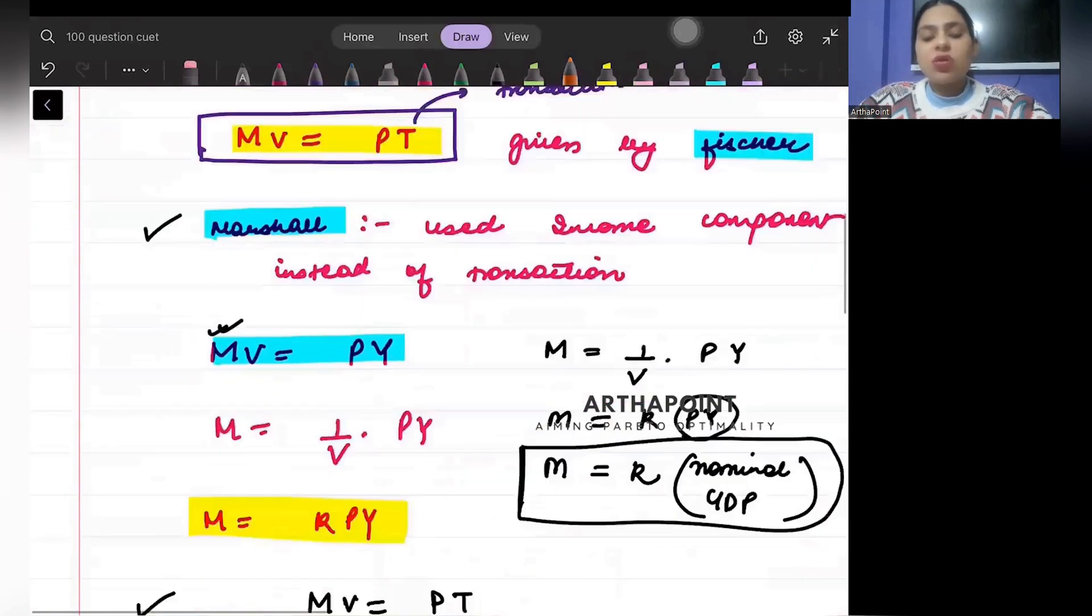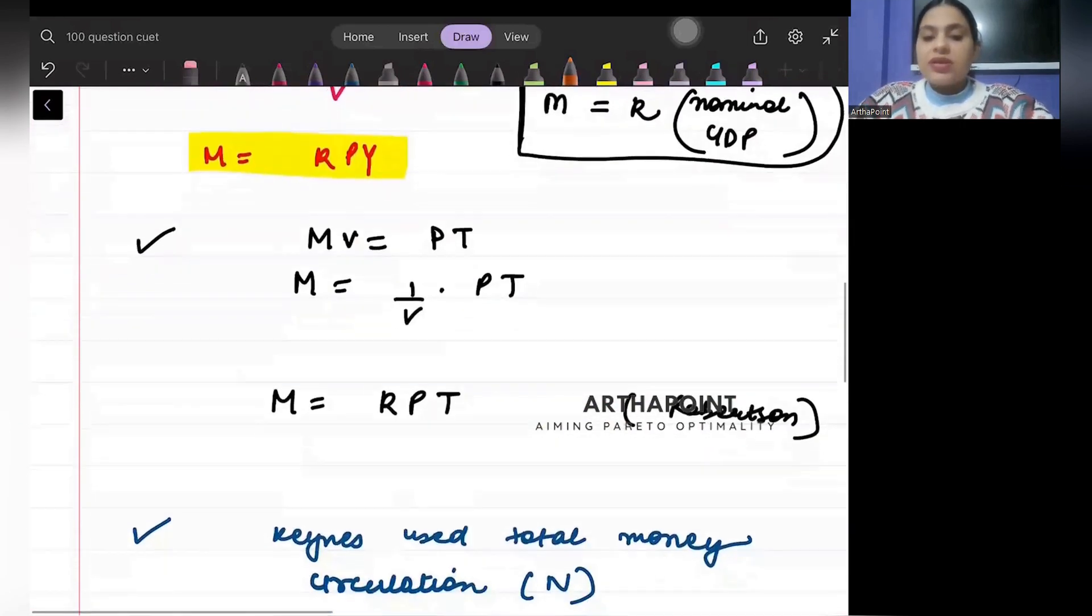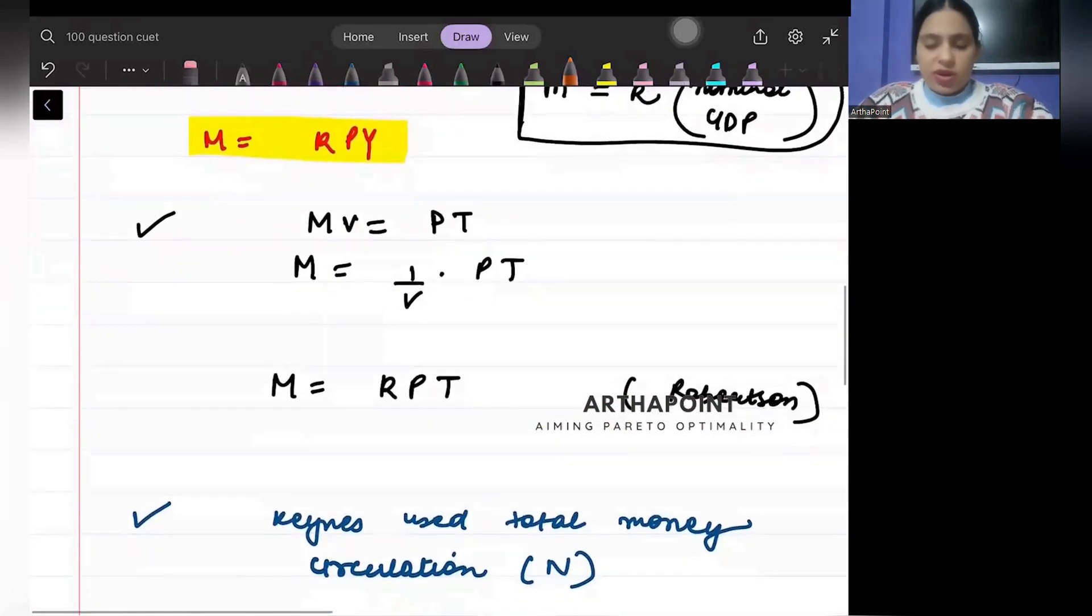Then what happened? Let's talk about Keynes. Keynes, I will talk about at the end. Let me talk about Robertson first.